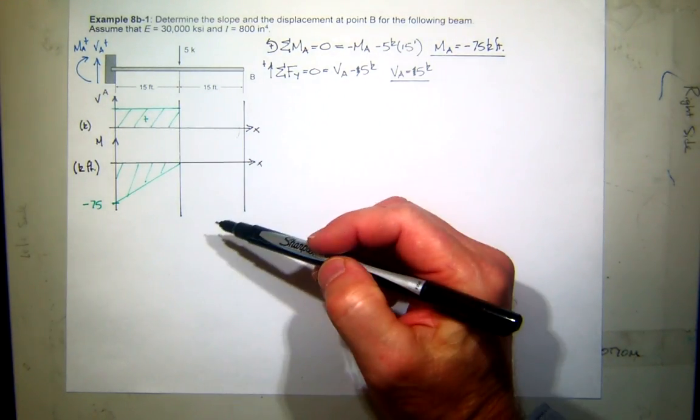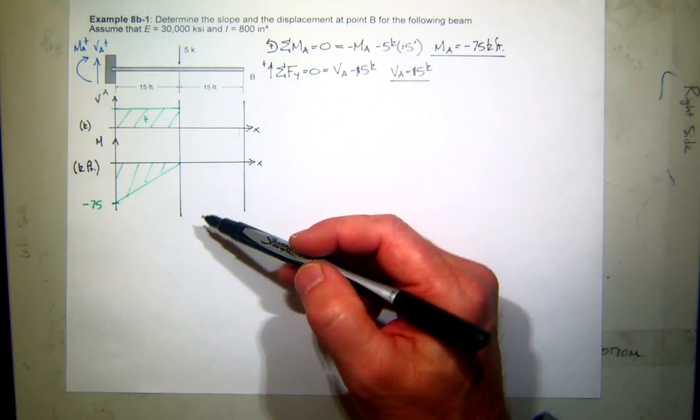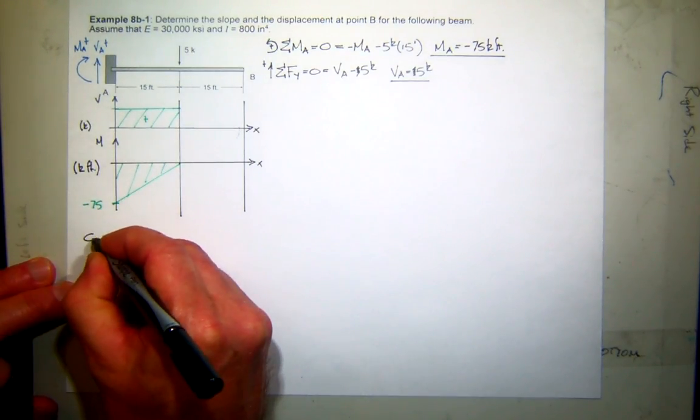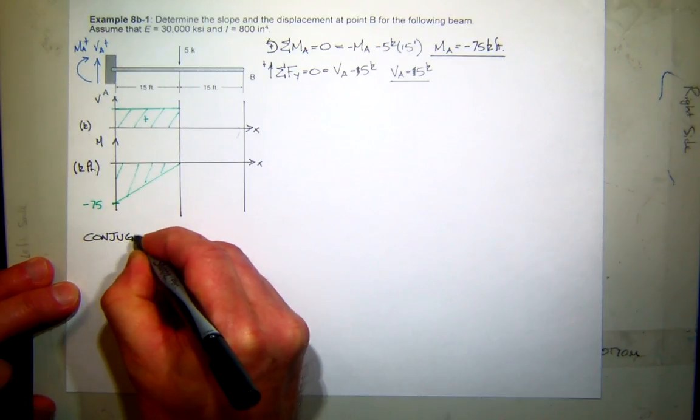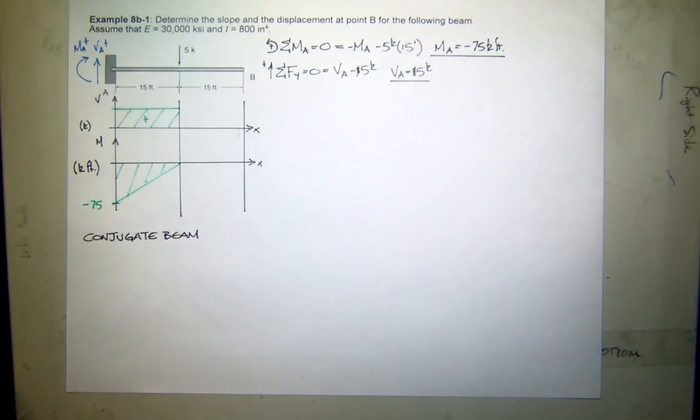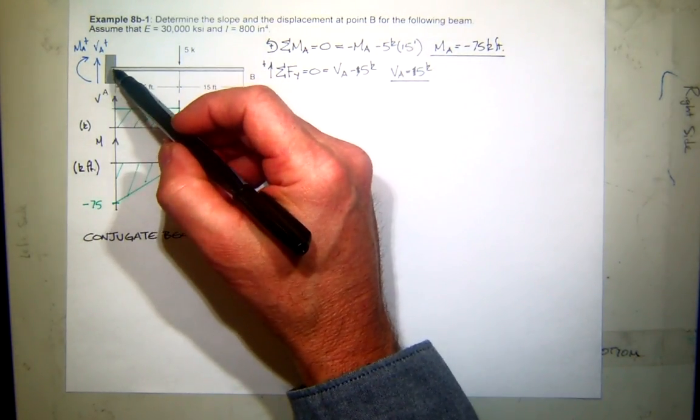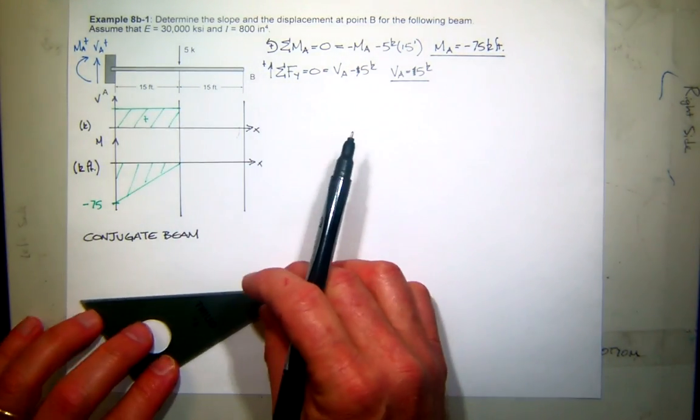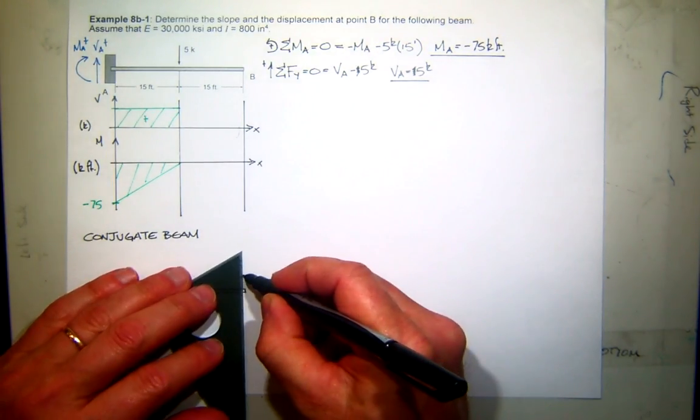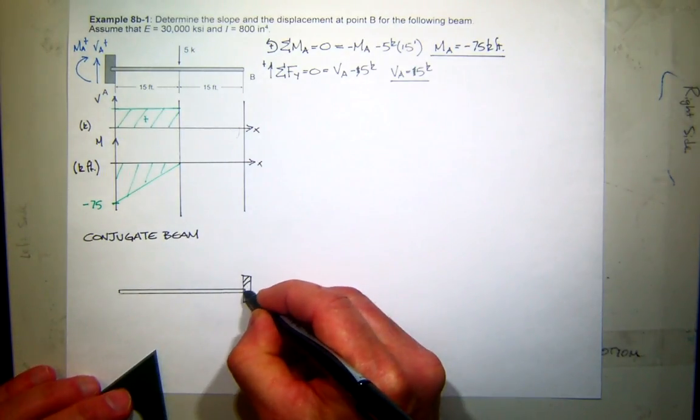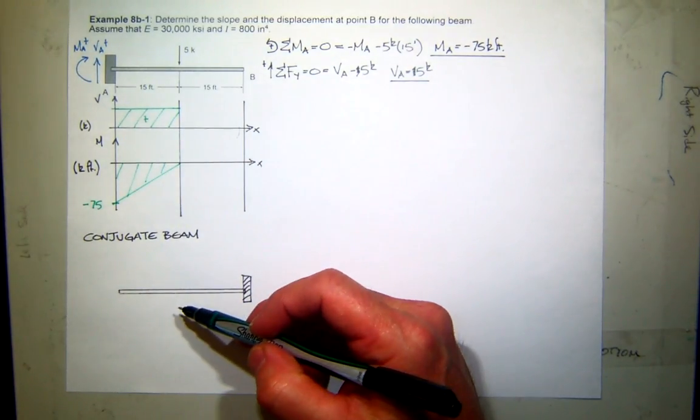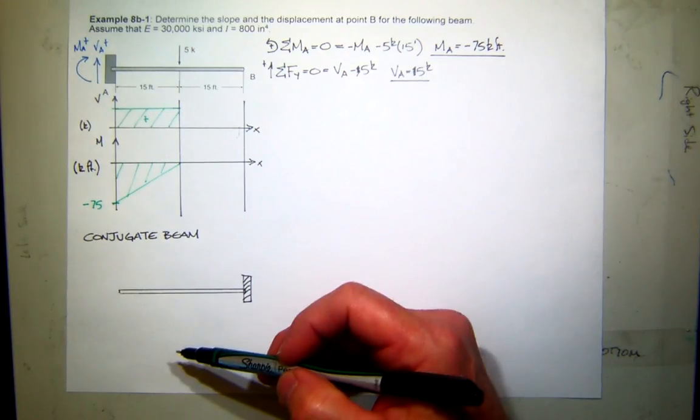A couple weeks ago, this is where you would stop. And you'd be very happy that you've had this very simple problem. But now we need to do the conjugate beam, right? So what would our conjugate beam look like? Well, let's draw it right underneath here. So here's what the conjugate beam will look like. So our fixed connection will become free, and our free end will become fixed. So I'll just draw a structure that looks kind of like that. So there's the fixed end.